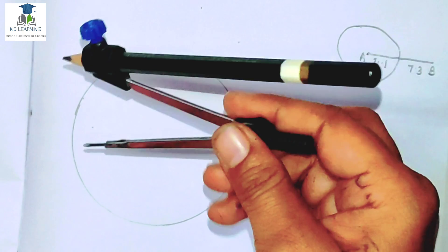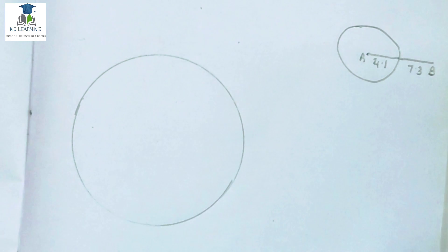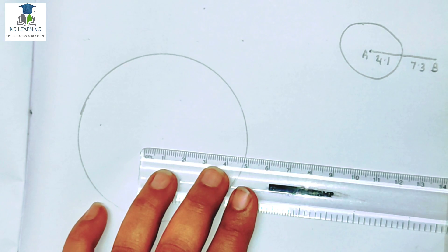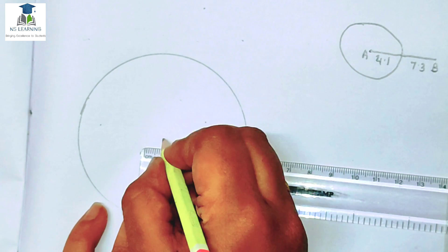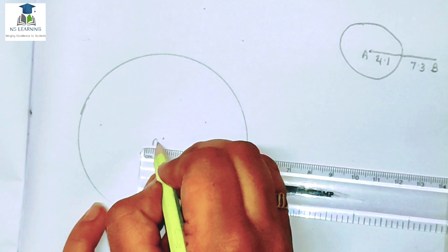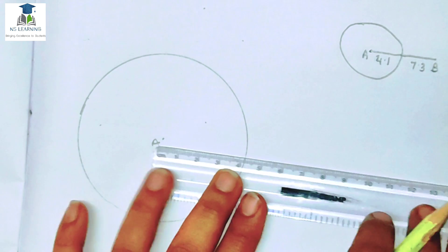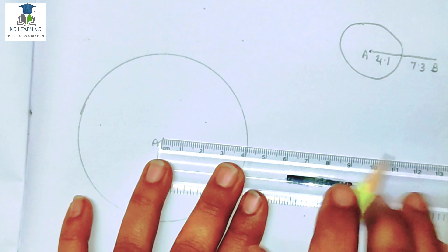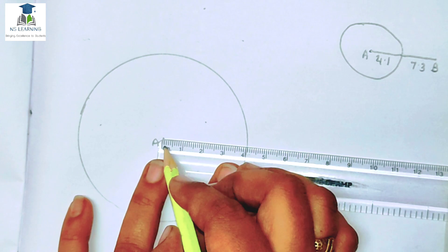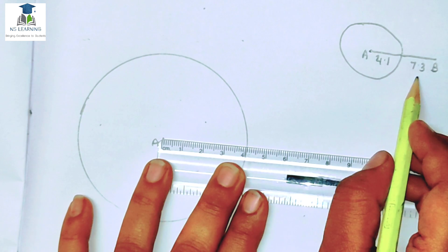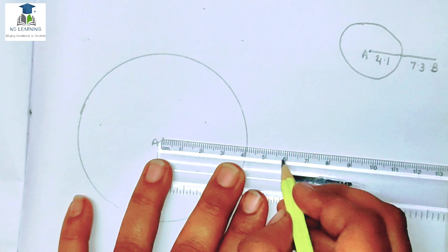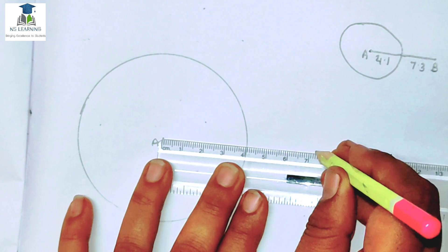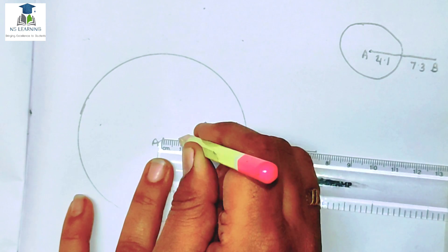तो ऐसे पकड़ना है आपको। यह रहा मेरा center point। Point को rough diagram में name दिया है — आप कोई भी names दे सकते हो अगर question में name नहीं दिया है। 7.3 cm का measurement draw कर दिया। आप compass में लेकर arc draw करके भी कर सकते हो।